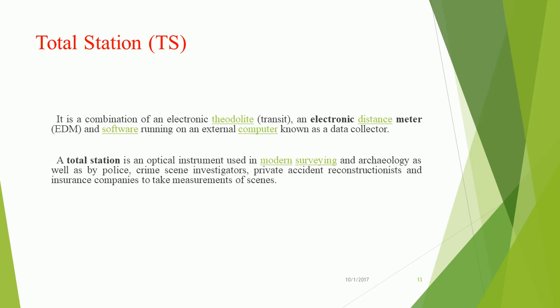Total Station (TS): It is a combination of an electronic theodolite, a transit, an electronic distance meter (EDM), and software running on an external computer known as a data collector. A total station is an optical instrument used in modern surveying and archaeology, as well as by police, crime scene investigators, private accident reconstructionists, and insurance companies to take measurements of scenes.